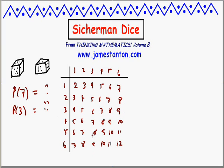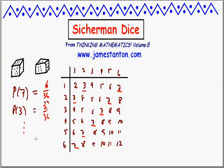Here are all the possible sums. We now see that the probability of rolling a seven is 6 options out of 36 — so 6 out of 36. The probability of rolling a three: there are 2 options out of 36. And so on — I can work out the probabilities of getting each particular value. That's the probability distribution for a sum on a pair of dice.